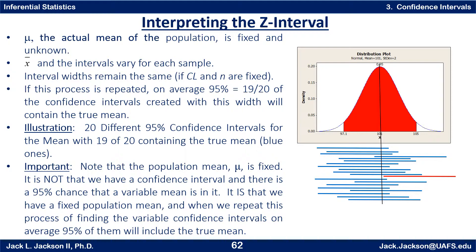If you actually did 20 repetitions, there's no guarantee that exactly 1 would miss and 19 would hit — it's random — but on average, 1 out of 20 would miss. That's 5%, and 95% of the time it would contain the true mean. Note carefully: the population mean mu is fixed. It is not that there's a 95% chance a variable mean is inside our interval. Rather, we have a fixed population mean, and when we repeat the process of finding variable confidence intervals, on average 95% of them will include the true mean.